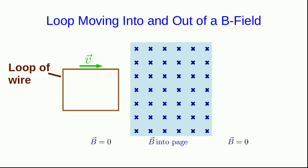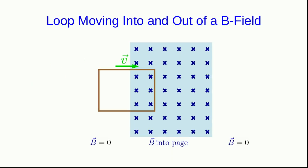Well, nothing happens as long as it's moving in the region of zero field. But things start getting interesting as it enters the region of the field. So when just the leading wire, the front wire of the loop, is in the field, as we've already seen, that's going to cause charge separation in that piece of wire.